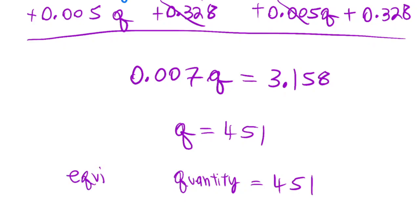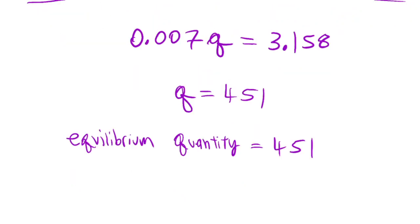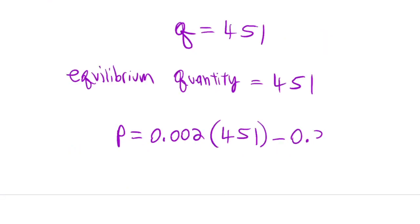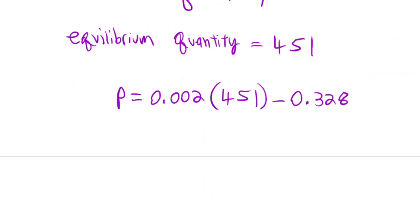For the equilibrium price, all I have to do is take that quantity of 451 and plug it into either one of those equations. I'm going to plug it into the top equation: P equals 0.002 times 451, the equilibrium quantity, minus 0.328. Doing this calculation — 451 times 0.002 minus 0.328 — gives me an equilibrium price of approximately 57 cents per bushel.